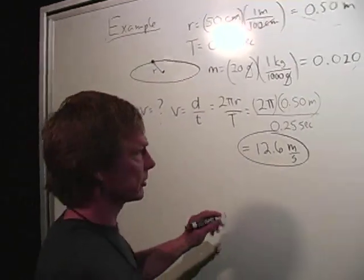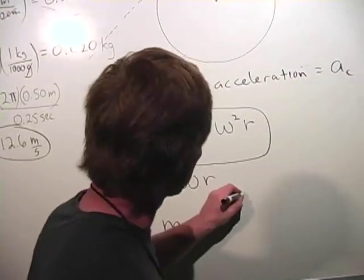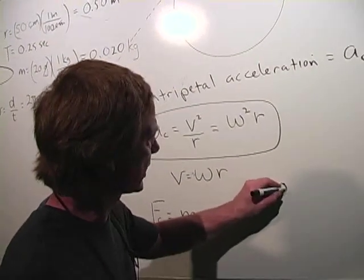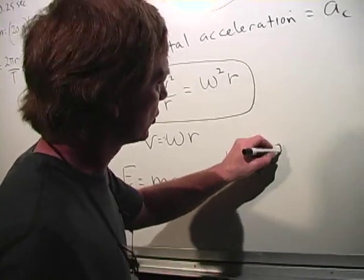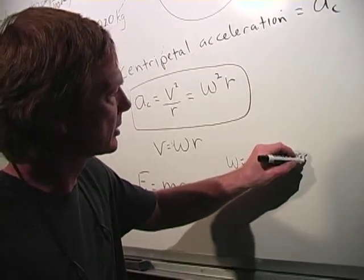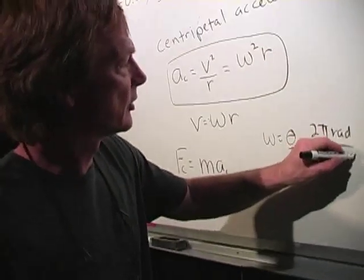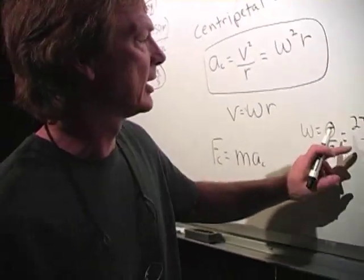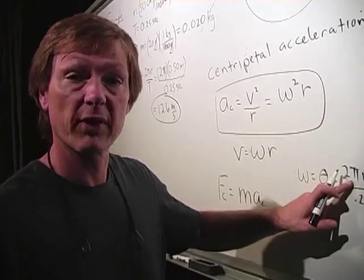I better do this off to the side here, just to make sure this is not on the problem, but if I told it to you, I'm going to make sure. Omega equals theta over t, which is the period, 2π radians because it went one revolution, divided by a time of 0.25 seconds. So that's 8 times π, pretty much about 25 radians per second.